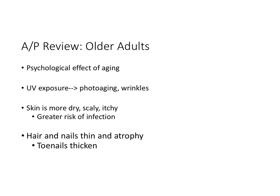Older adults, because of chronic UV exposure throughout their life, have photo aging and wrinkles. For all older adults, the skin becomes more dry, scaly, and itchy — and with skin dryness especially, there's a greater risk of infection. Hair and nails tend to thin and atrophy. And for some reason, the toenails actually thicken — that's your random fun fact for today.